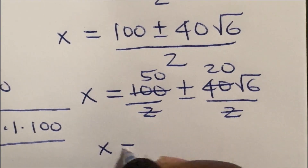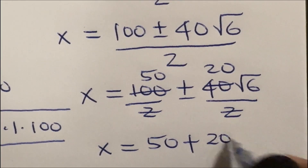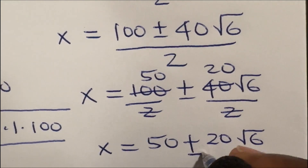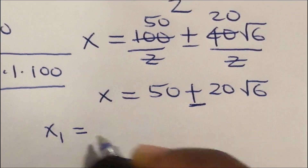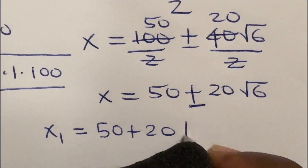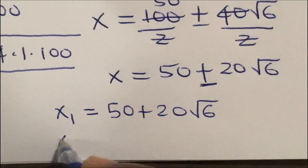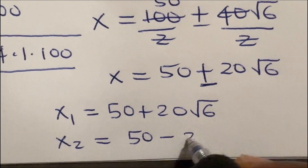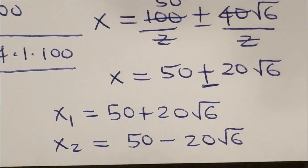So x is simply 50 plus or minus 20 root 6. We can say x₁ is equal to 50 plus 20 root 6, and x₂ is equal to 50 minus 20 root 6. These are the two values of x.